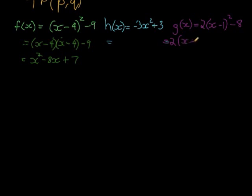2x minus 1, x minus 1, minus 8. And that then simplifies to 2x squared minus 4x, I'm multiplying in the two already, plus 1 times 2 is plus 2, minus 8 is minus 6.